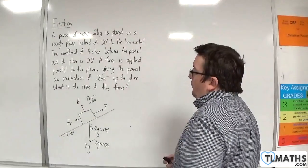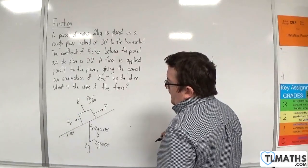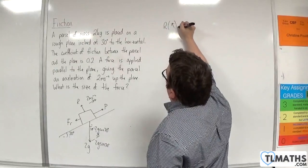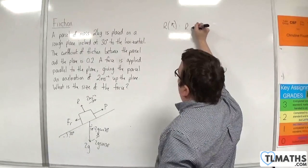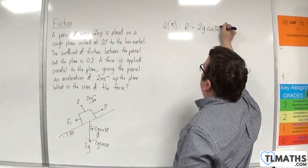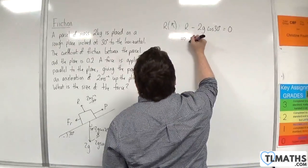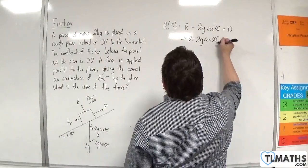We need to find P. First of all, I will resolve perpendicular to the plane, taking that direction as positive. We have R, take away 2g cos 30, is equal to 0. So R is 2g cos 30.